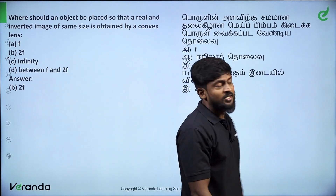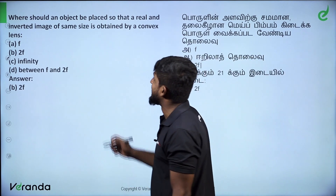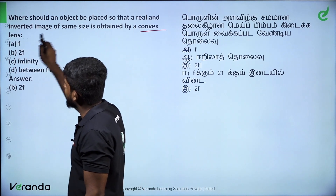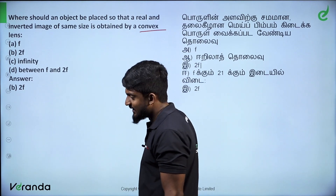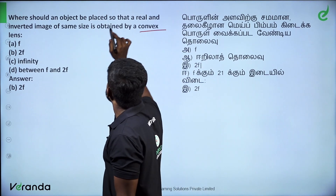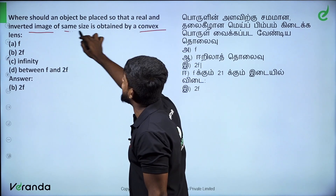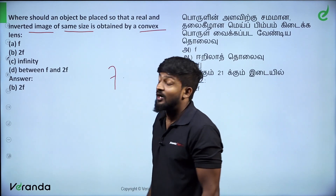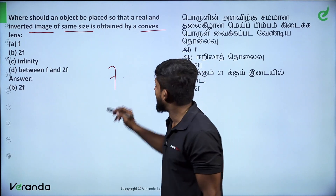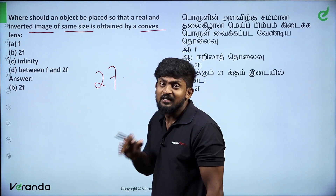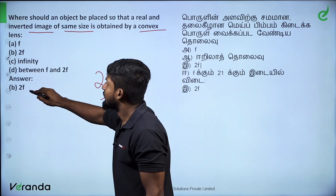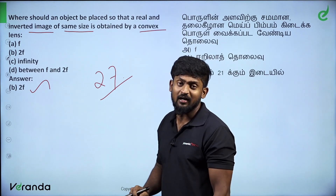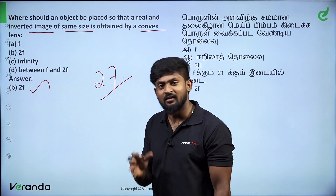Where should an object be placed so that a real and inverted image of the same size is obtained by a convex lens? To get an image of the same size using a convex lens, the object must be placed at 2F. That is the answer — 2F.